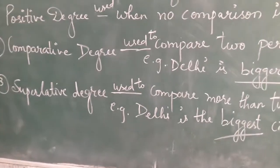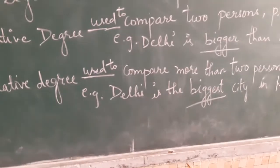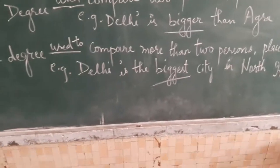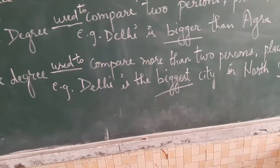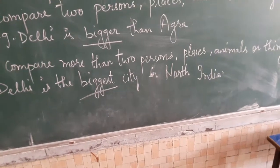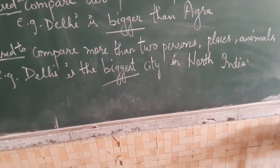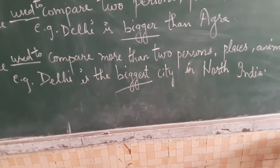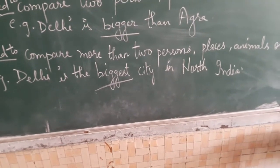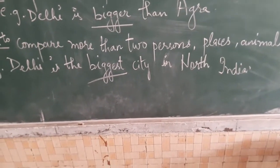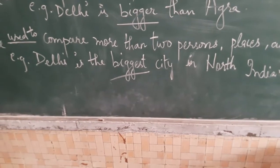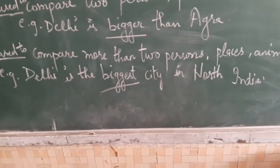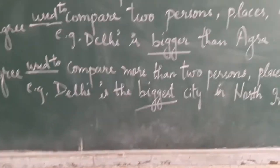Superlative degree is used to compare more than two persons, places, animals, or things. For example: Delhi is the biggest city in North India. Here Delhi is compared with all cities in North India — more than two states are compared — that is why this is an example of superlative degree.